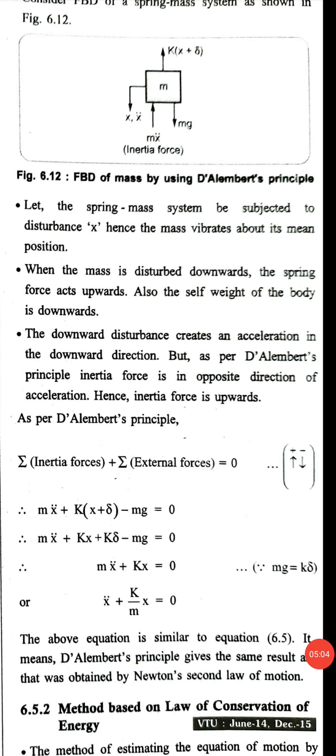So mx double dot plus kx plus k delta minus mg equals zero. Replacing mg equals k delta, we get mx double dot plus kx equals zero.